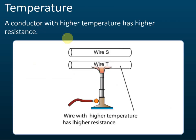The third factor is temperature. The higher the temperature, the higher the resistance — a conductor with a higher temperature has a higher resistance. If we have two wires of the same length, same cross-sectional area, and made up of the same material, the one with the higher temperature will have higher resistance. So wire with higher temperature has higher resistance.